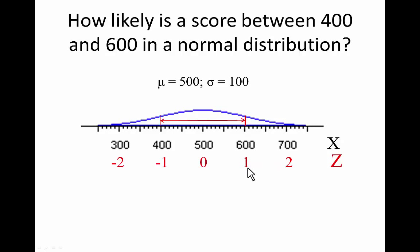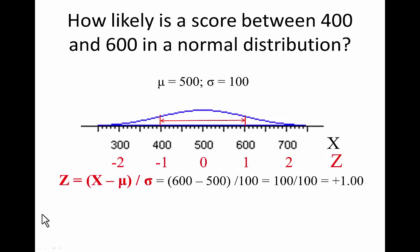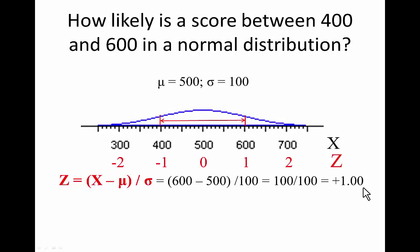The 600 is one standard deviation above the mean, so it has a z-score of one. We can compute the exact z-score corresponding to any x-score with this formula: take the x, subtract the mean to get the deviation, then divide by the standard deviation to find the number of standard deviations. So 600 minus the mean of 500 gives a deviation of 100, which is one standard deviation — a z-score of one.